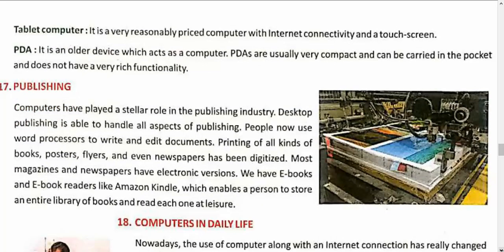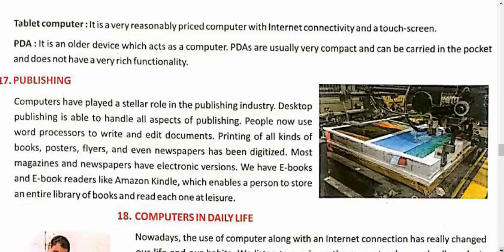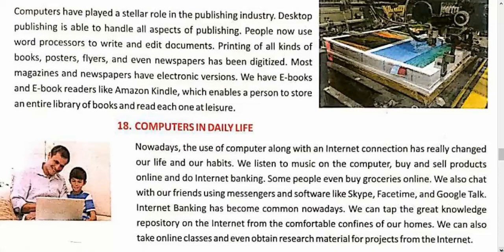Publishing — in book publishing, computers are used extensively. Before actual printing, the complete design is done in one form; once finalized, then only paper is used — otherwise there would be a lot of waste. For banners and designs, everything is done through computers. Even e-books are popular — you can find books on Amazon Kindle. In daily life, chatting on Facebook, Instagram, and other platforms — all with the help of computers.